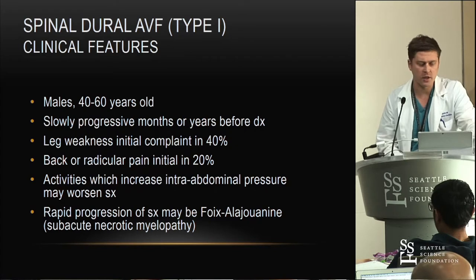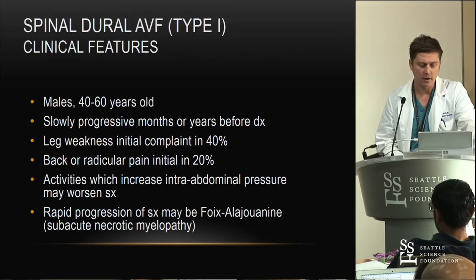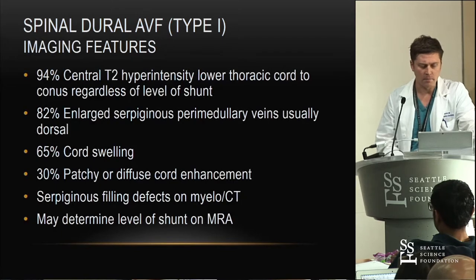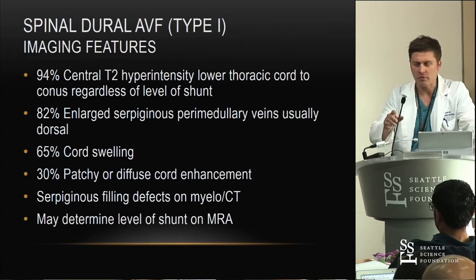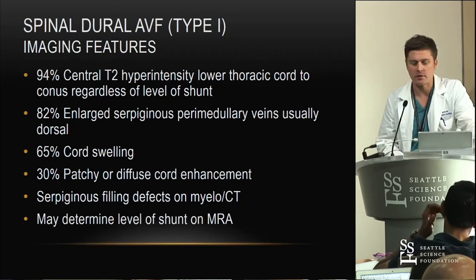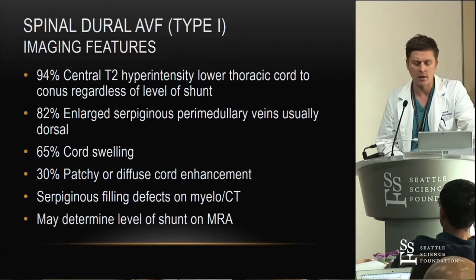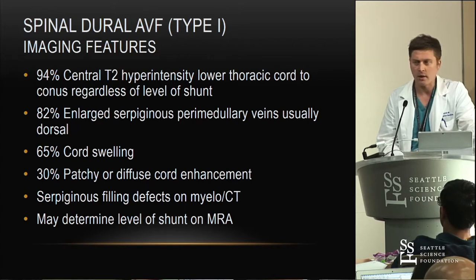The classic presentation is a male, 40 to 60 years old, with slowly progressive symptoms — often back pain, leg weakness — and then radicular symptoms coming later. Symptoms can worsen with increased intra-abdominal pressure, or you can get the Foix-Alajouanine syndrome with spinal cord infarction. It's really important that if someone has this long history, this diagnosis is in the back of your mind, because the vast majority of dural fistulas I see have had a history of at least six months, often with prior spine decompression surgery, and no one has really looked for these characteristic imaging findings.